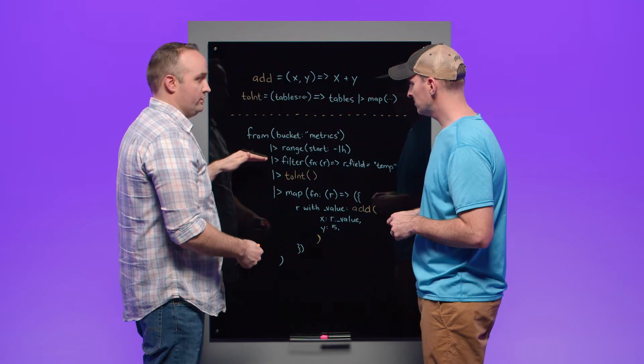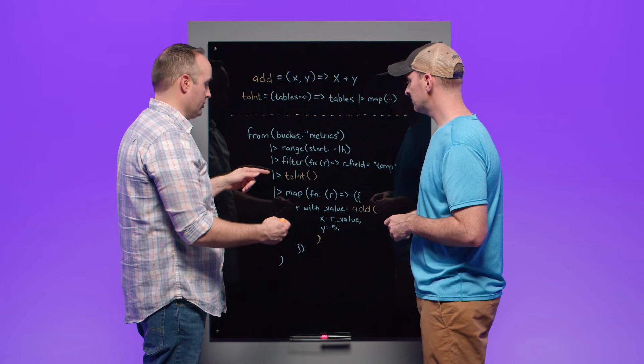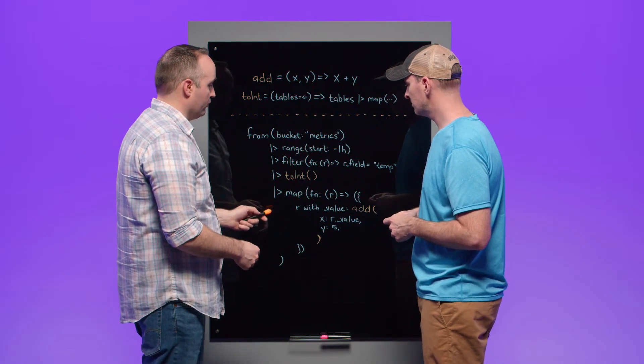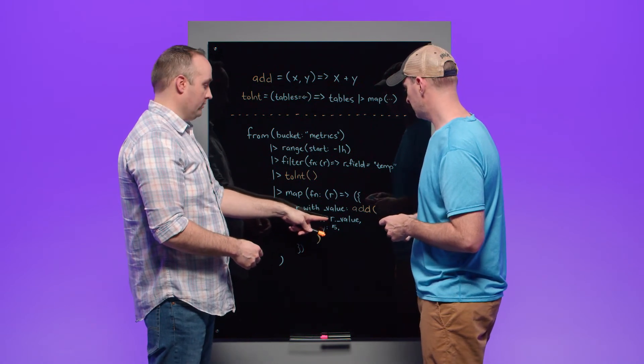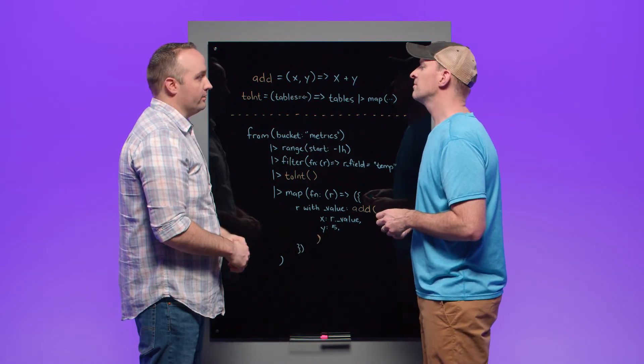We then use our custom defined toint function to receive all the data from filter and convert all the values in that stream of tables to integers. That data is then pipe forwarded into map. The map function is really important because it iterates over all the rows in the input table and either rewrites or updates each individual row. In this specific case, we're using our custom add function to redefine the values in the value column. It takes the existing value in the value column and adds five to that and returns a stream of tables with that modified value.